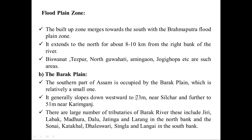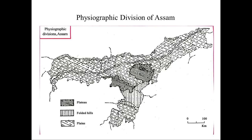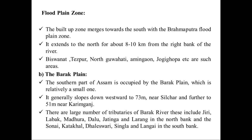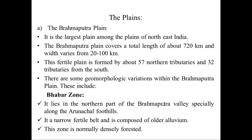The slope of the Barak plain is downward towards the west — it is 73 metres near Silchar and 51 metres near Karimganj, confirming the westward slope. There are a large number of tributaries of the Barak River, including Ziri, Labag, Motura, Dalu, Jatinga, and Larang on the North Bank, and Sumai, Katakhal, Dharasuri, Singla, and Langai on the South Bank. This concludes the physiographical divisions of Assam based on topographical structure.